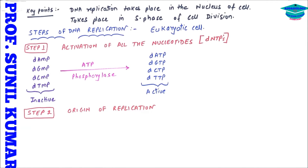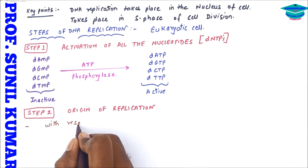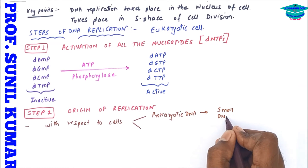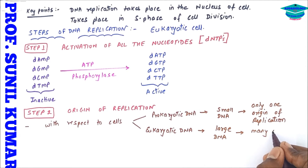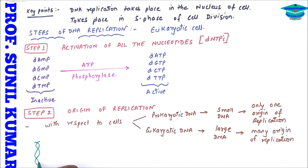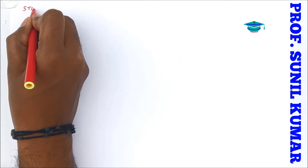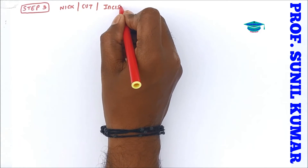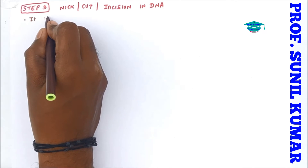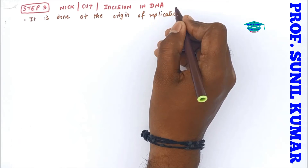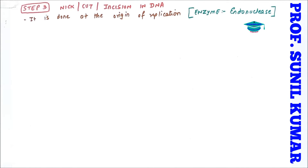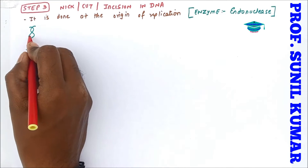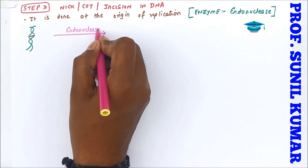Step two is to find the origin of replication. In a prokaryotic cell the DNA is very small, so there is only one origin of replication. In a eukaryotic cell, which has large linear DNA, there are many origins of replication. Searching for the origin of replication is the most important task. Step three is to make a nick or incision in the DNA at the origin, done by the enzyme endonuclease — 'endo' meaning inside, cutting the nucleic acid within.